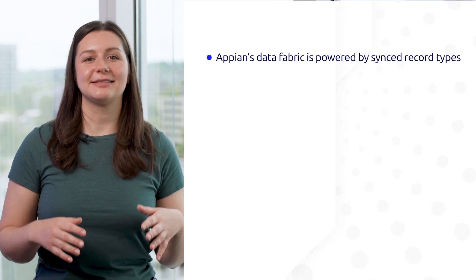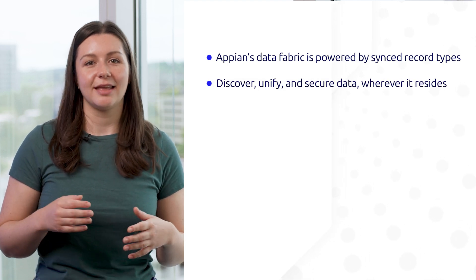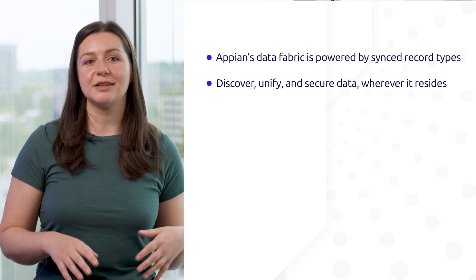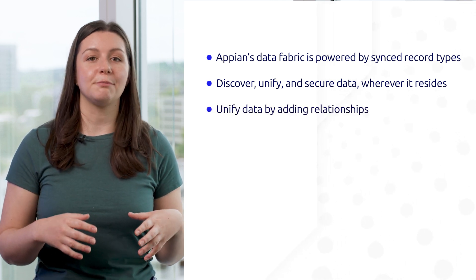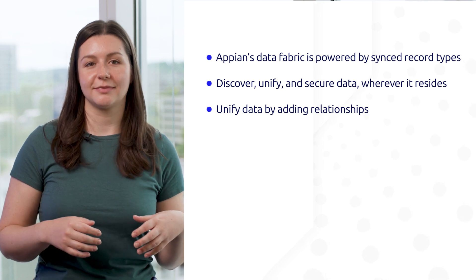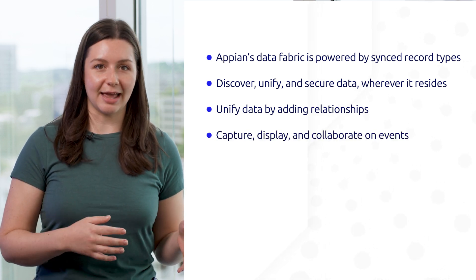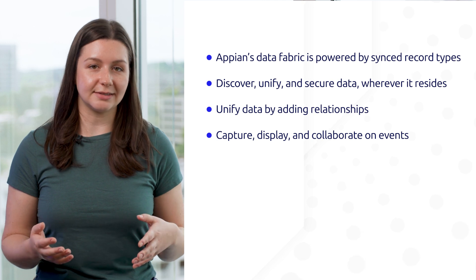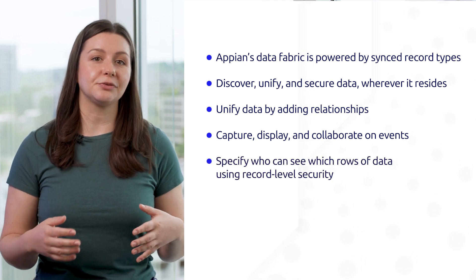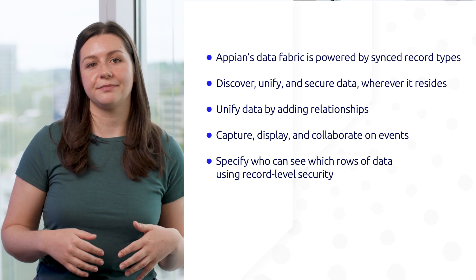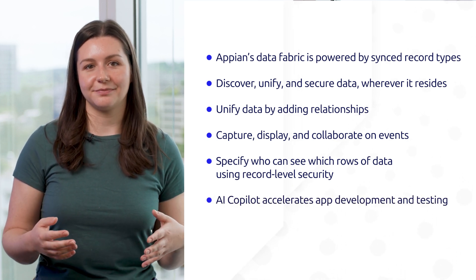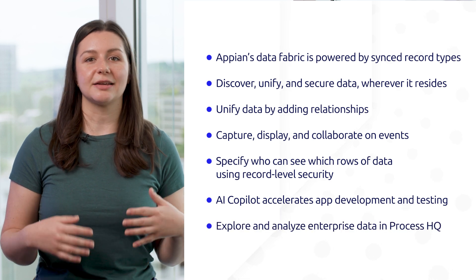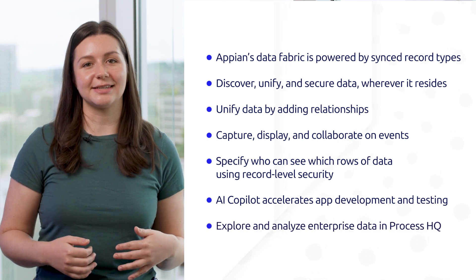Let's recap. Appian's Data Fabric is powered by synced record types. It enables you to discover, unify, and secure your data wherever it resides. Unify your data by adding relationships. Unify your app to capture, display, and collaborate on events. Specify who can see which rows of data using record level security. AI Copilot accelerates app development and testing. Business users can explore and analyze your enterprise data in Process HQ.